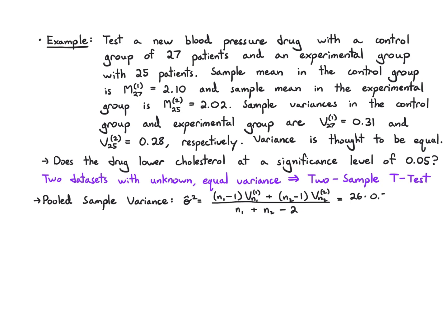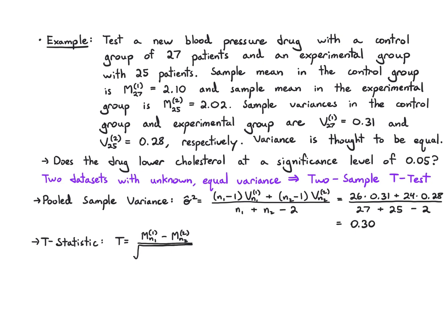The pooled variance is computed as (n1 minus 1) times s1² plus (n2 minus 1) times s2², all divided by (n1 plus n2 minus 2). That gives us (26 times 0.31 plus 24 times 0.28) over (27 plus 25 minus 2), which equals 0.30. The t-statistic is the difference in sample means divided by the square root of the pooled variance times (1/n1 plus 1/n2): (2.1 minus 2.02) over root(0.30 times (1/27 plus 1/25)), giving 0.53.